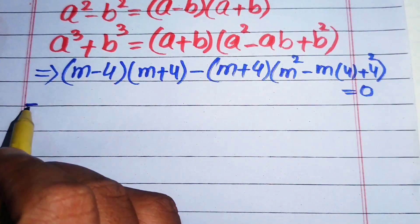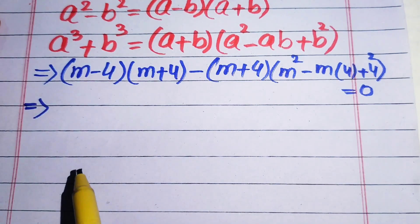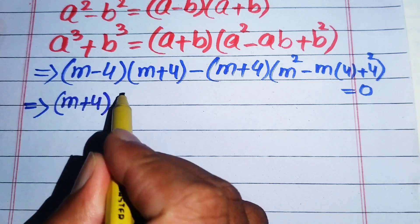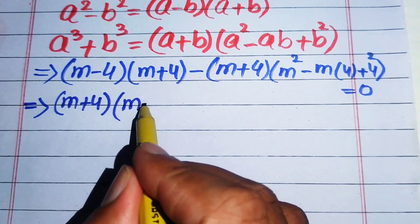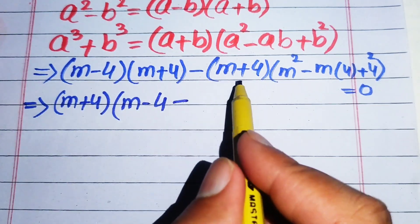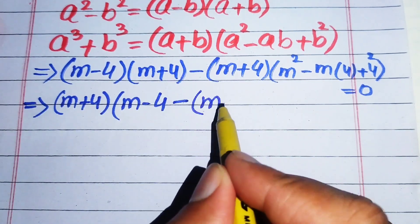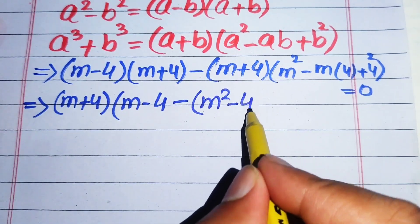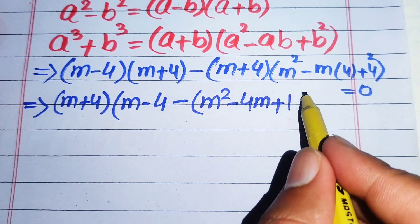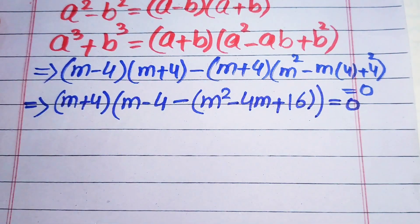In the next step we focus on this equation and see that m plus 4 is a common term. We take out m plus 4 as a common factor. The remaining terms are m minus 4, and from the cubic part we get m squared minus 4m plus 16, since 4 squared equals 16. This whole equation equals 0.